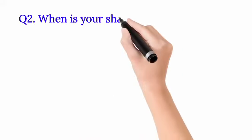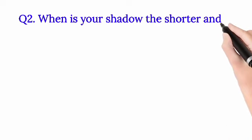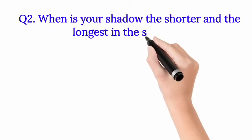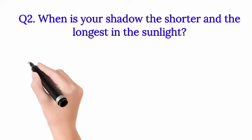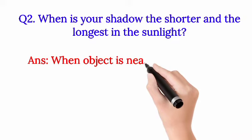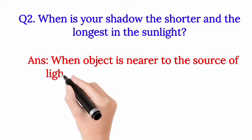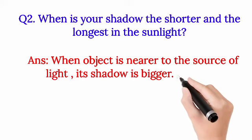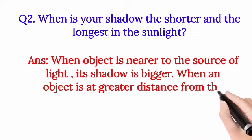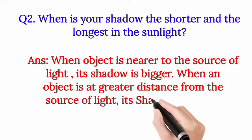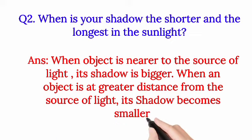Question 2: When is your shadow the shorter and the longest in the sunlight? (سورج کی روشنی میں آپ کا سایہ سب سے چھوٹا اور سب سے بڑا کب ہوتا ہے؟) Answer: When an object is nearer to the source of light, its shadow is bigger. When an object is at a greater distance from the source of light, its shadow becomes smaller.